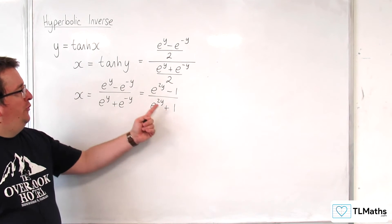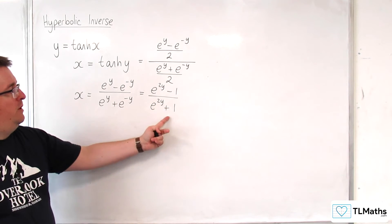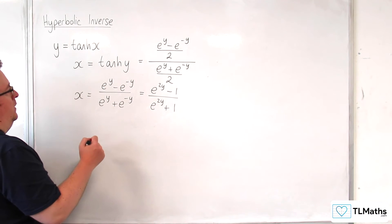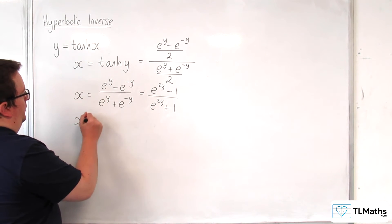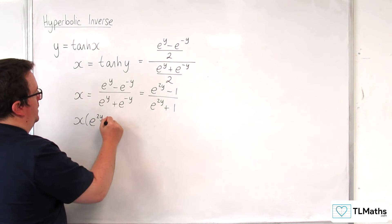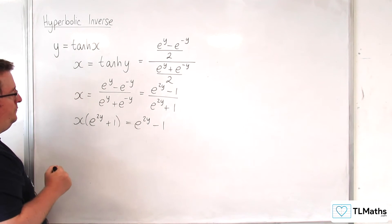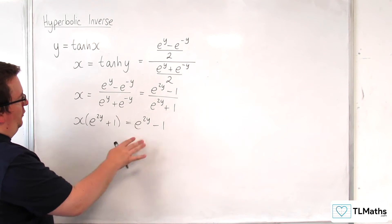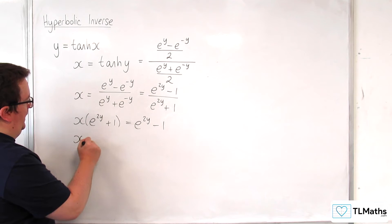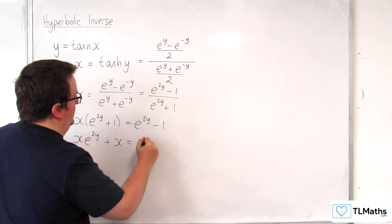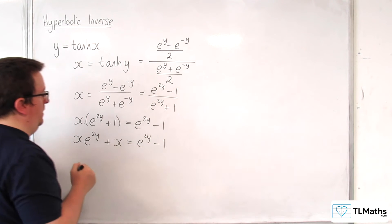Now I'm going to multiply both sides by e to the 2y plus 1. So x times e to the 2y plus 1 is equal to e to the 2y minus 1. So let's multiply this through: x e to the 2y plus x is equal to e to the 2y take away 1.